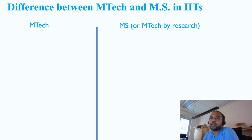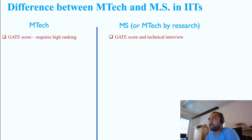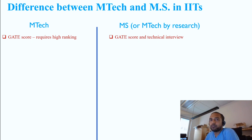The first difference between MTECH and MS program in IITs is about the GATE ranking. MTECH generally requires a higher GATE score, typically within 200 in some of the old IITs, and admission to MTECH is based mostly or purely on your ranking. Whereas for MS you can have higher rankings up to 400 to 500 and still get in, because there is also a technical interview after you have the required GATE score. If you have a ranking of around 500 or 600, you will probably not get a callback from MTECH, whereas the MS admission committee may still call you for an interview.